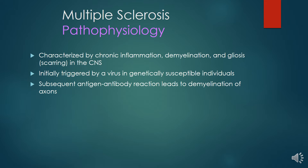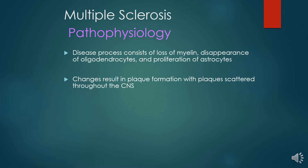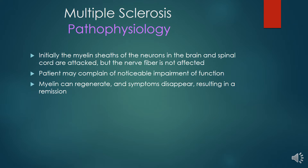Subsequent antigen-antibody reactions lead to demyelination of axons. The disease process consists of loss of myelin, disappearance of oligodendrocytes and proliferation of astrocytes. The changes result in plaque formation with plaques scattered throughout the CNS. Initially, the myelin sheath of neurons in the brain and spinal cord are attacked but the nerve fiber is not affected.